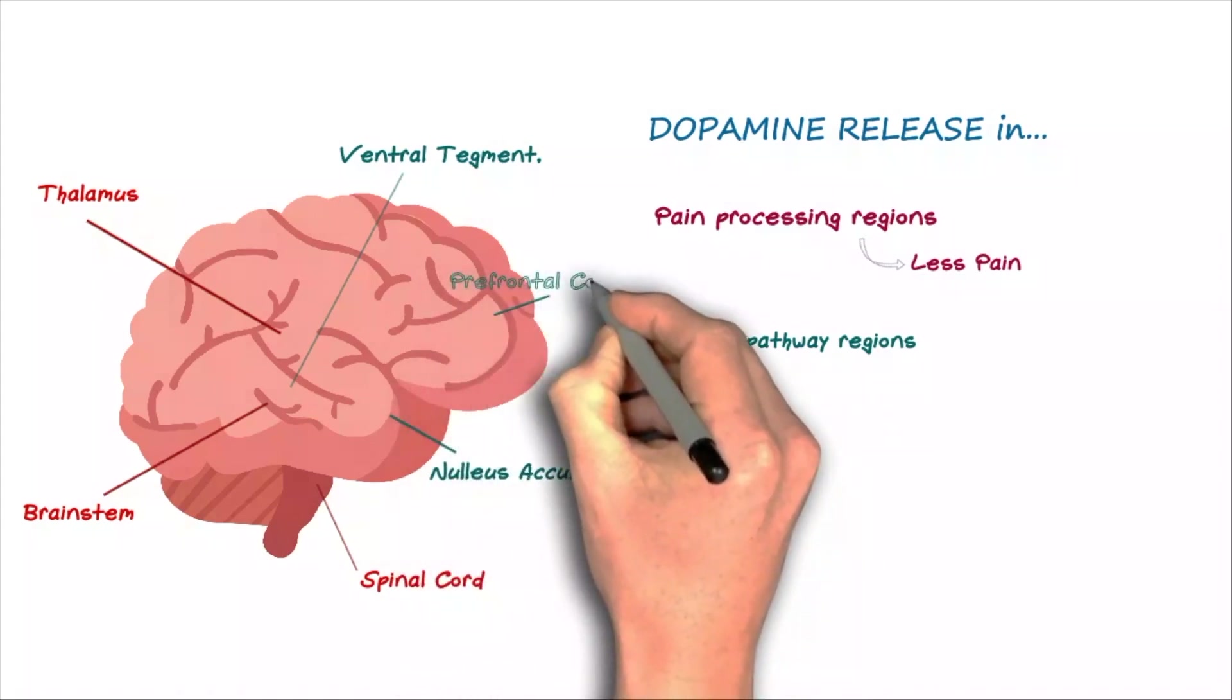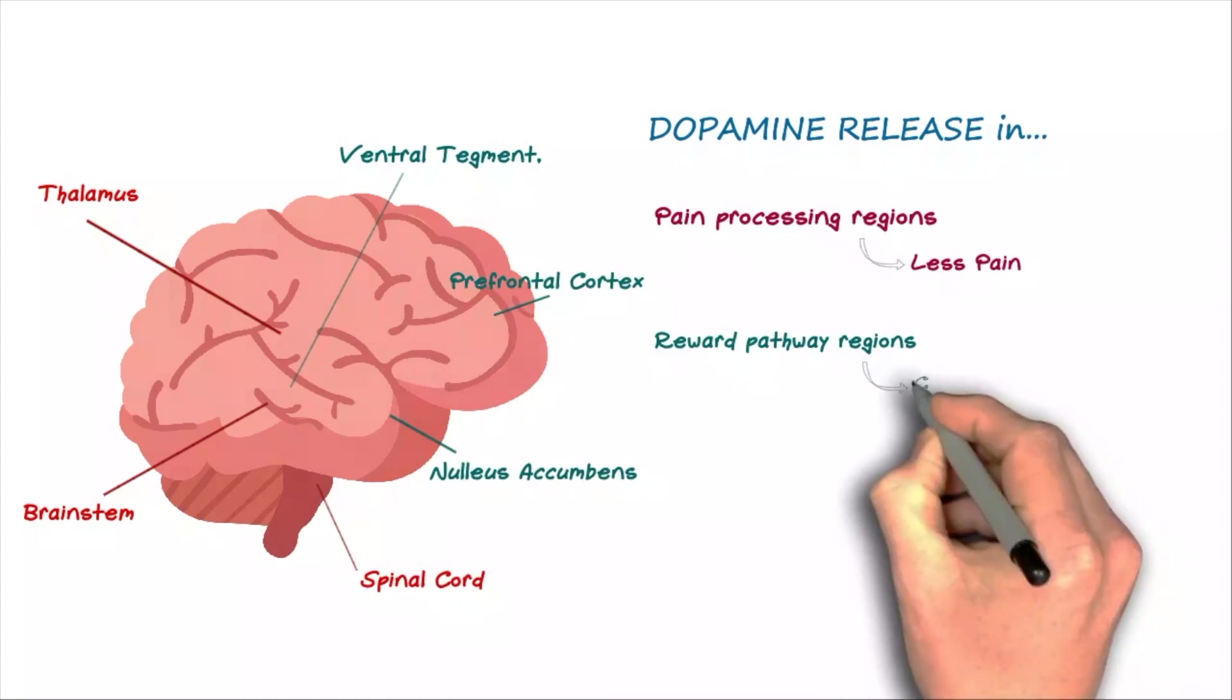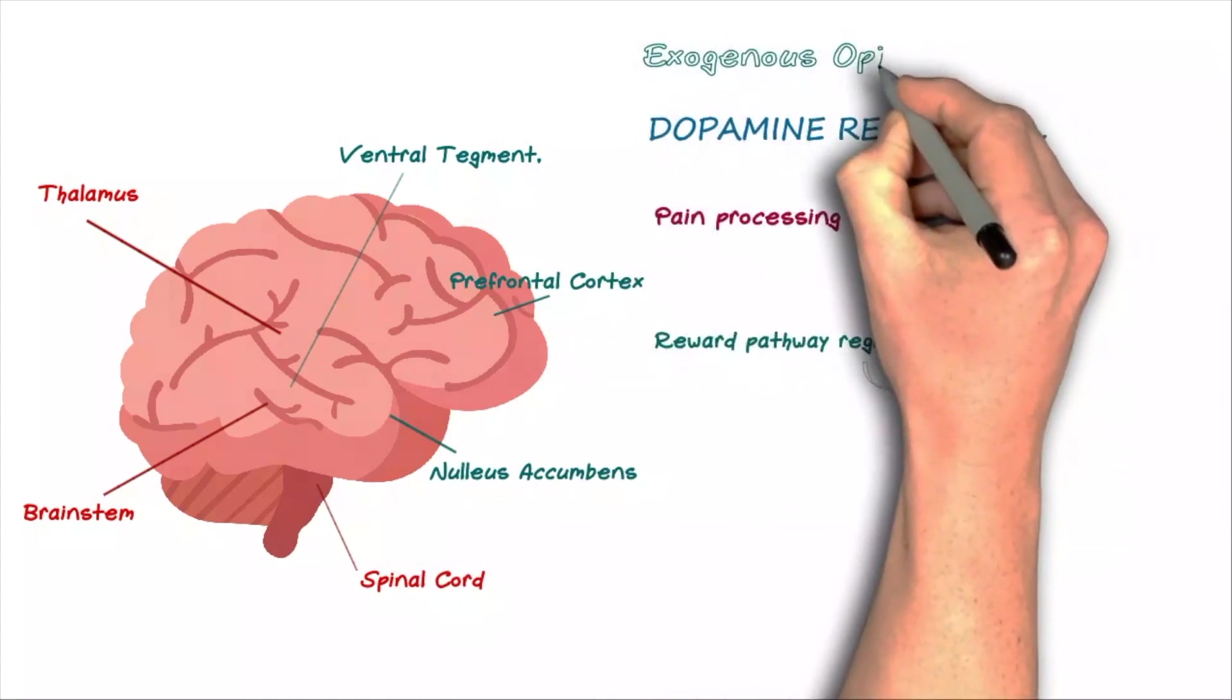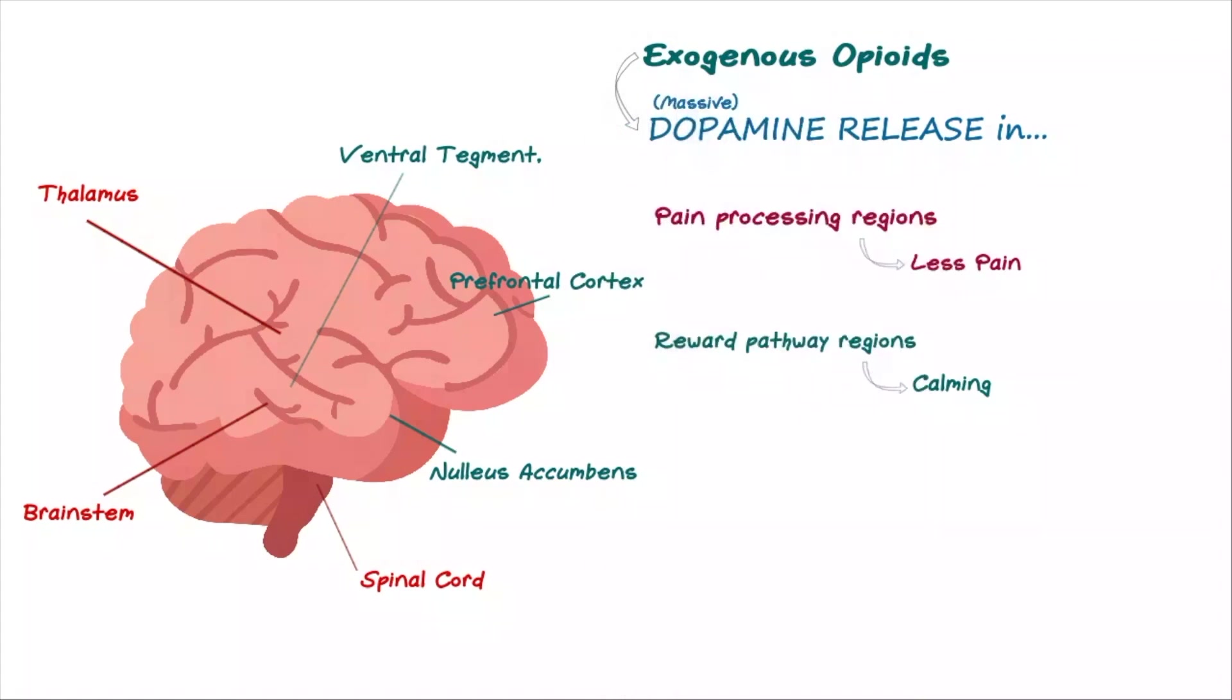So that's how it works normally. But when a powerful exogenous opioid binds to the opioid receptors, the result is a massive flood of dopamine. This helps with pain control, but it can also cause an incredible state of euphoria within the regions of the brain involved in the reward pathway, which is an emotional high.